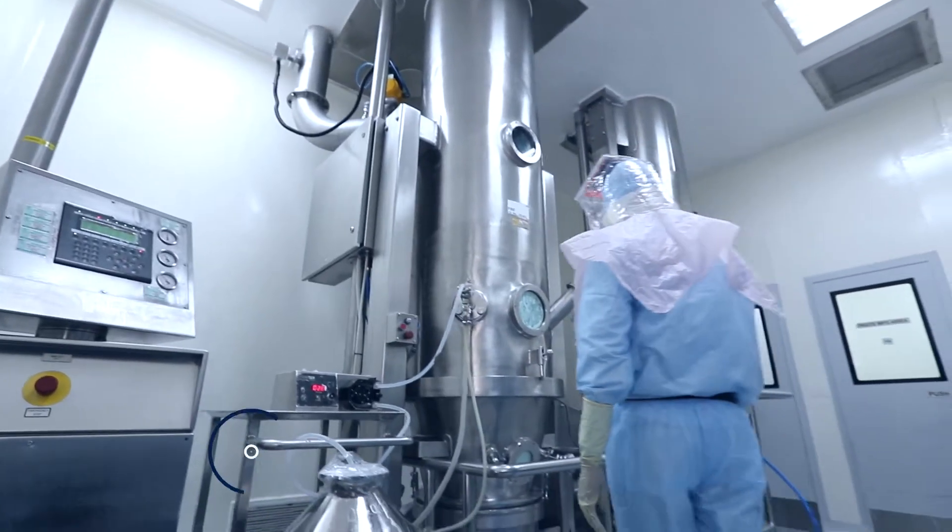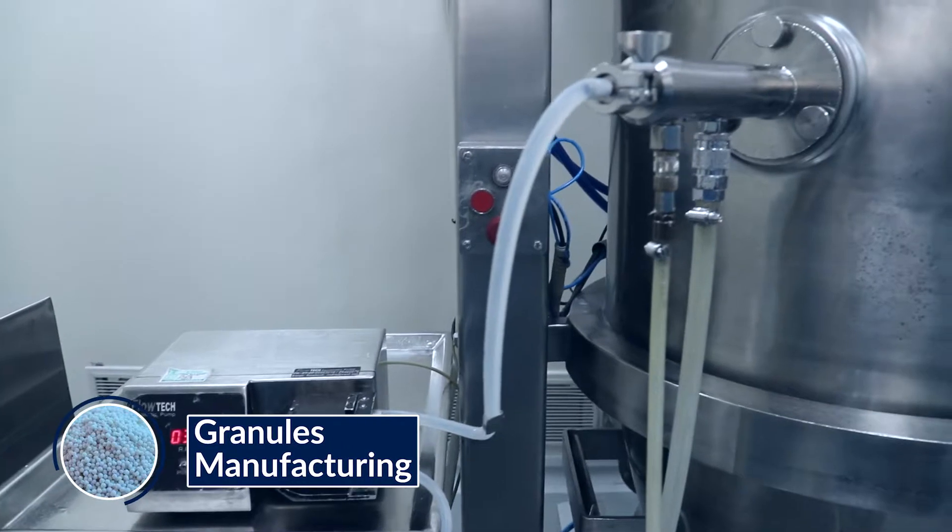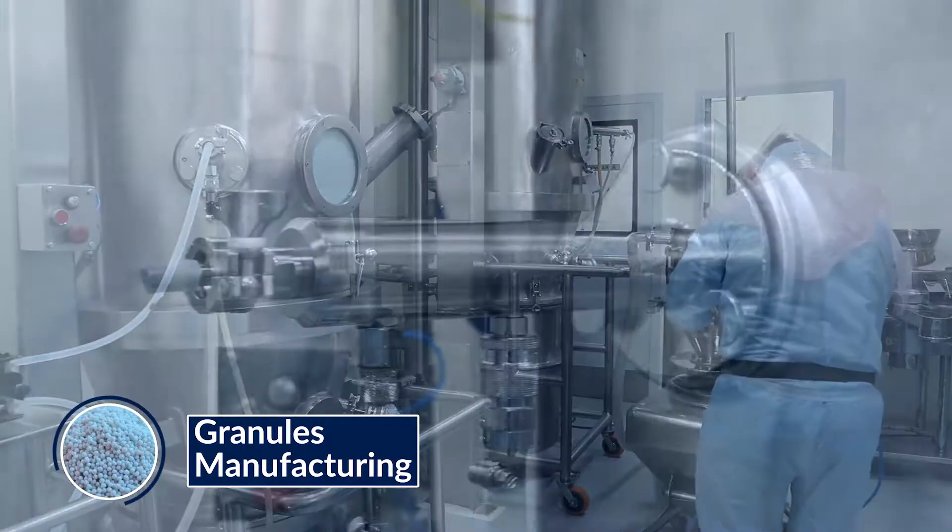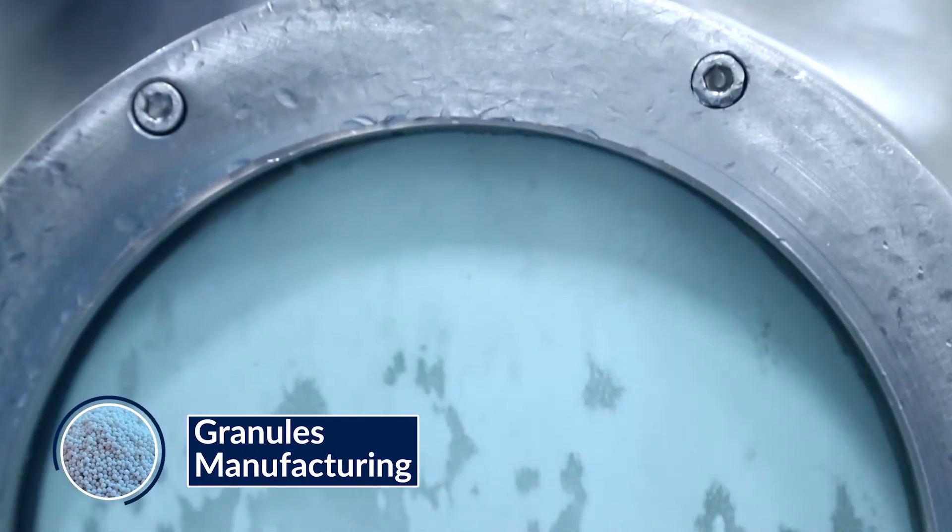Granules manufacturing. The raw material is then blended as per the validated process parameters and pharmacopoeia. The granules are then fluidized and coated with hot air blowers and binders.